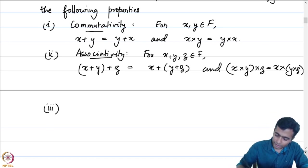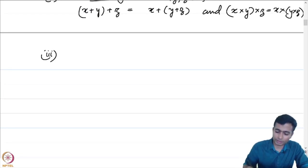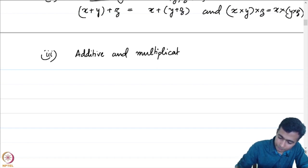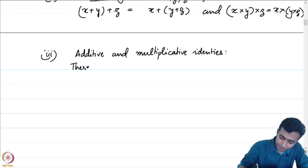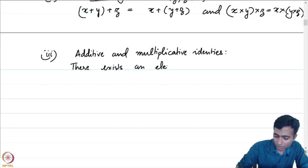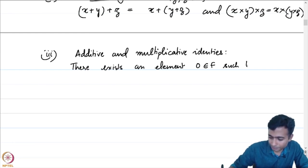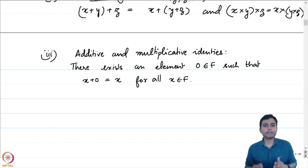The third property is existence of additive and multiplicative identities. There exists an element, denoted 0, in F such that x plus 0 is equal to x for all x in F. This is the additive identity in F. There also exists an element 1 such that x times 1 equals x for all x in F.